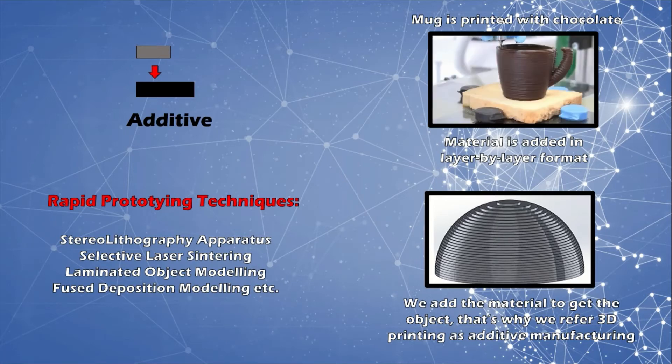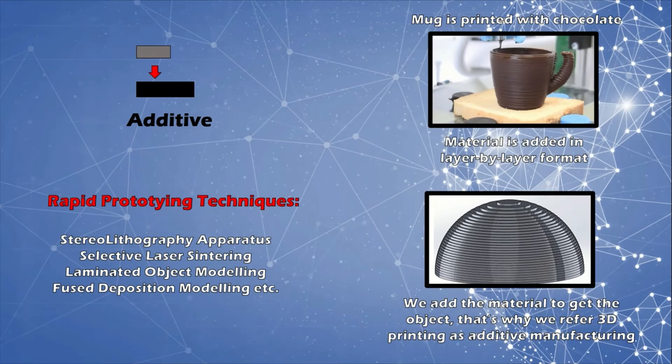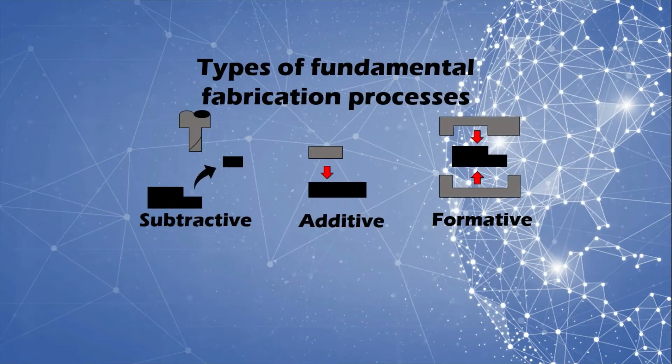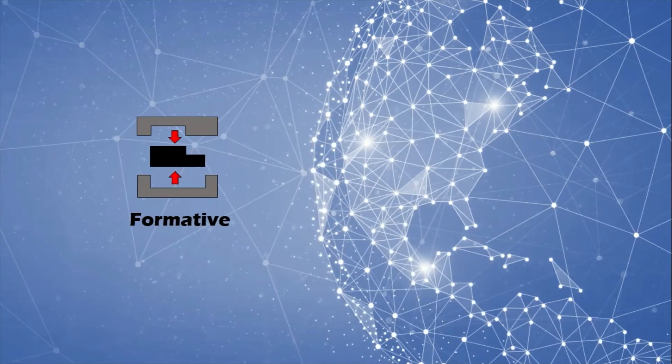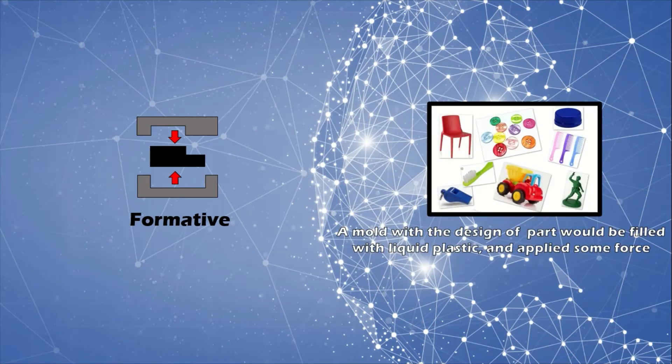Lastly, the formative process is one where mechanical force or restricting forms are applied on a material so as to form it into the desired shape. Now suppose a company wanted to make toys for kids to play or some household products.